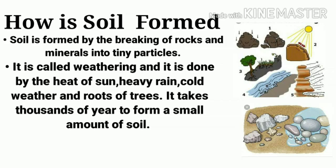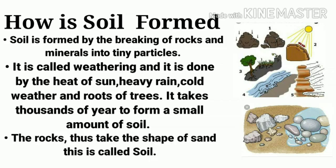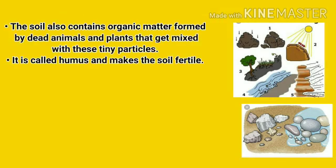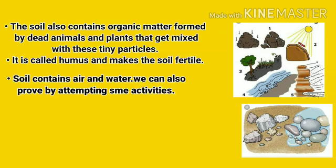How is soil formed? Soil is formed by the breaking of rocks and minerals into tiny particles. This is called weathering, and it is done by the heat of the sun, heavy rains, cold weather, and roots of trees. It takes thousands of years to form a small amount of soil, and the rocks take the shape of sand. This is called soil.